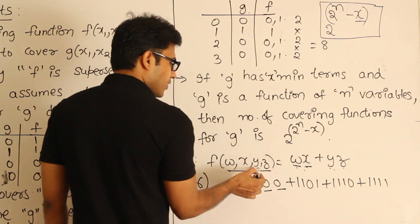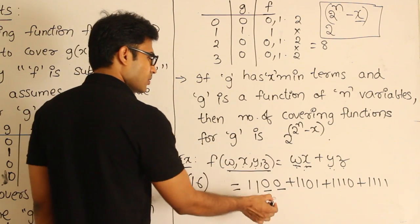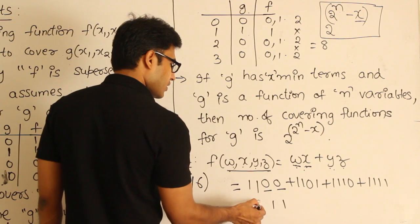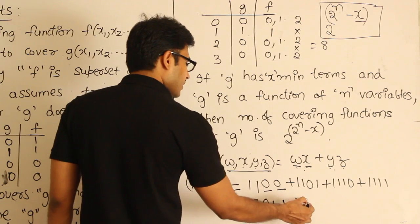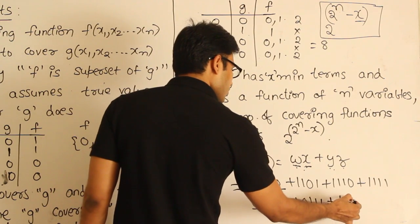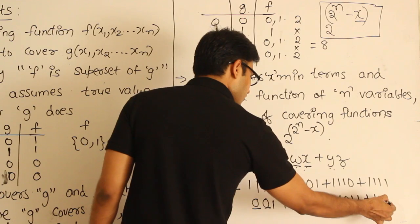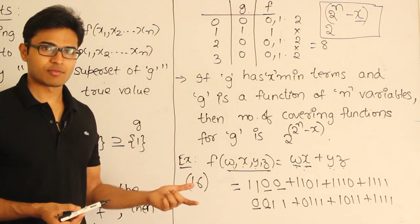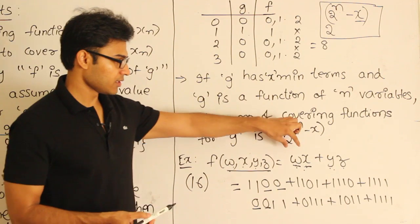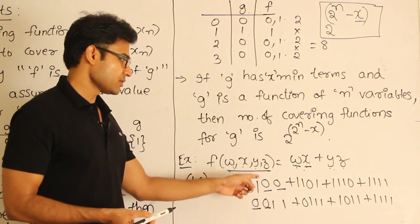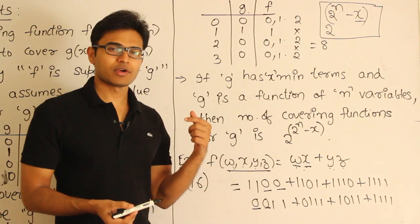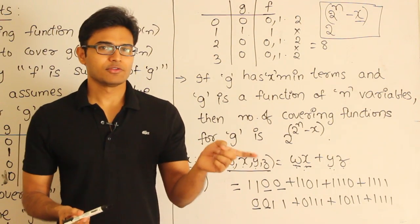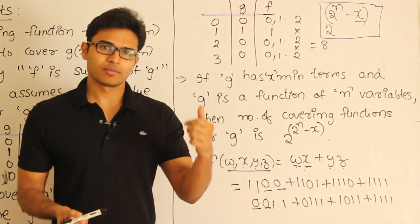And then for yz: y and z are both 1,1, and w and x can take any combination — (0,0,1,1), (0,1,1,1), (1,0,1,1), (1,1,1,1). So whenever you want to expand a product term into canonical sum-of-products form, you take the product term, write the fixed bits, and for the remaining variables put all their combinations in the corresponding positions.